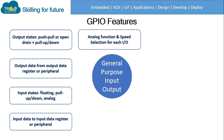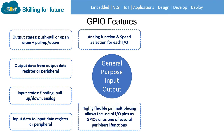The next feature is analog function and speed selection for each input and output pin. We can configure each pin as an analog function and select a variety of speeds for each input/output pin. Highly flexible pin multiplexing allows the user to use input/output pins as GPIO or as one of several peripheral functions.